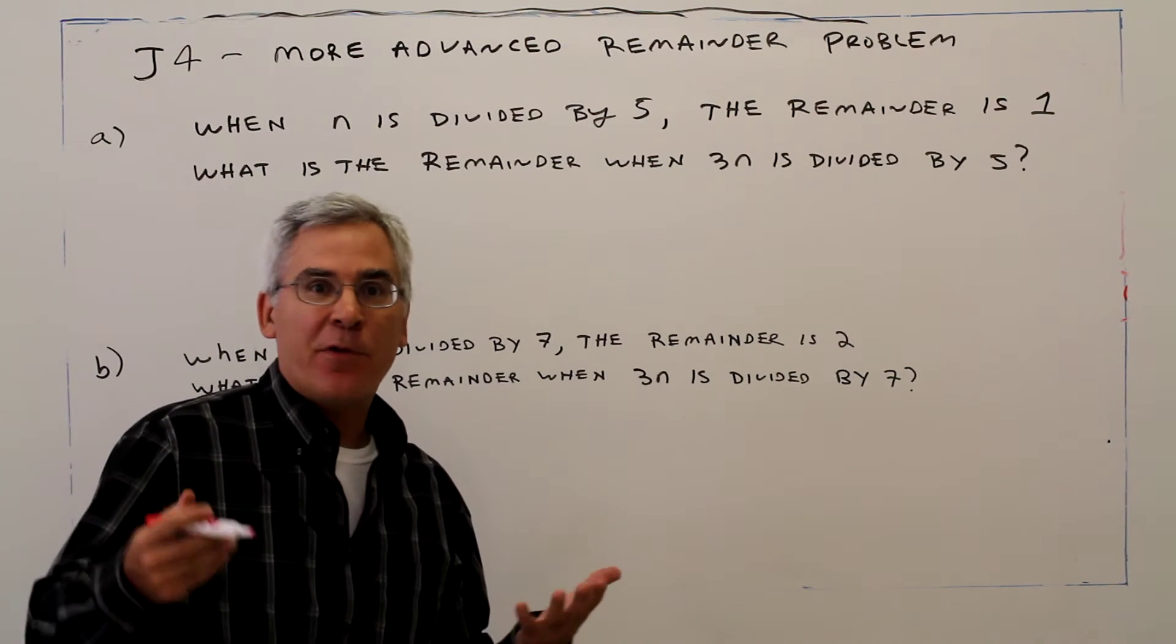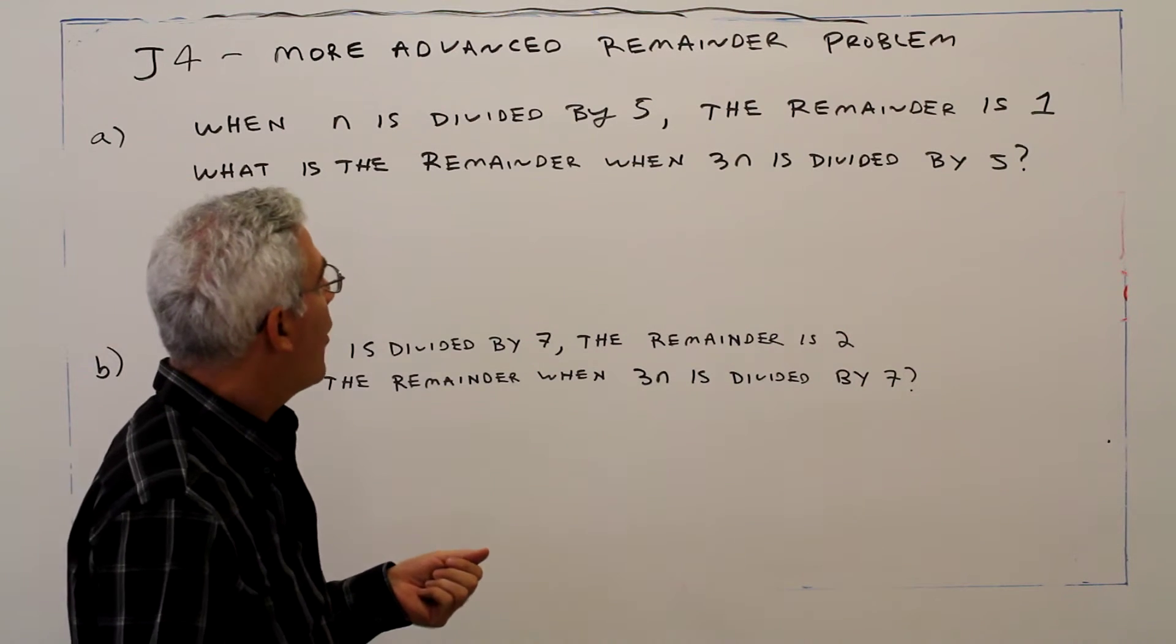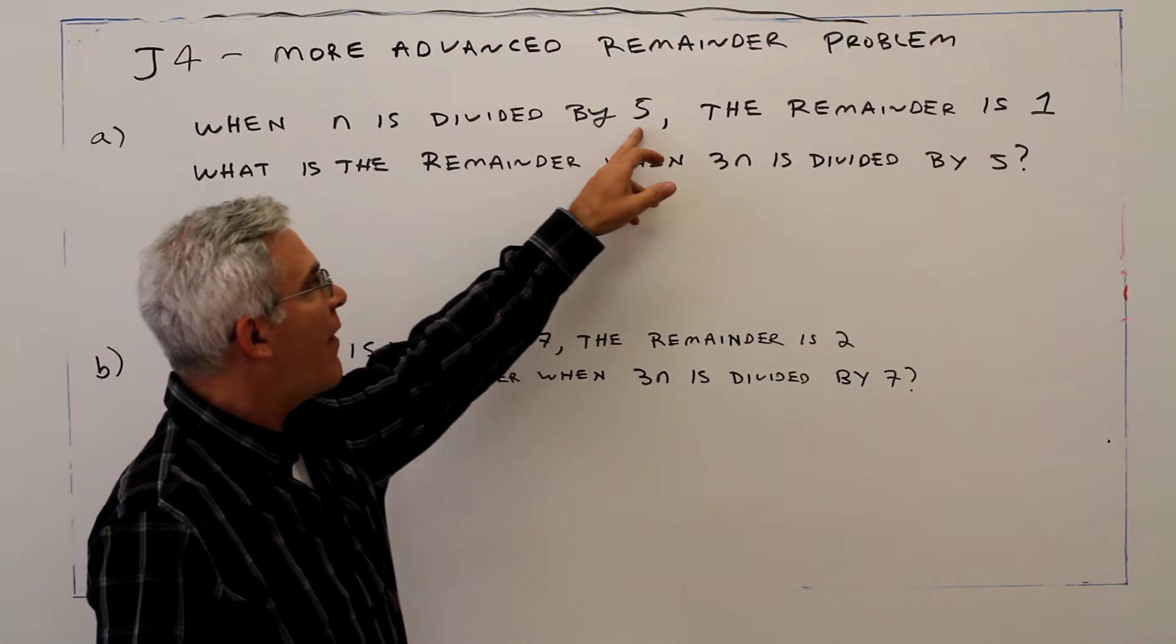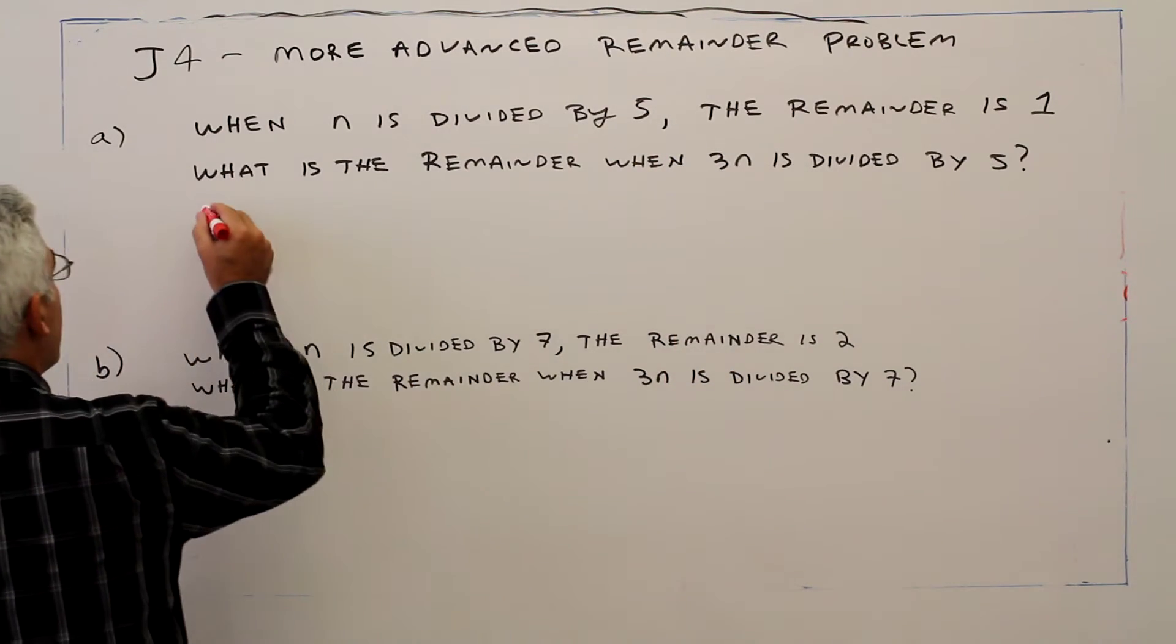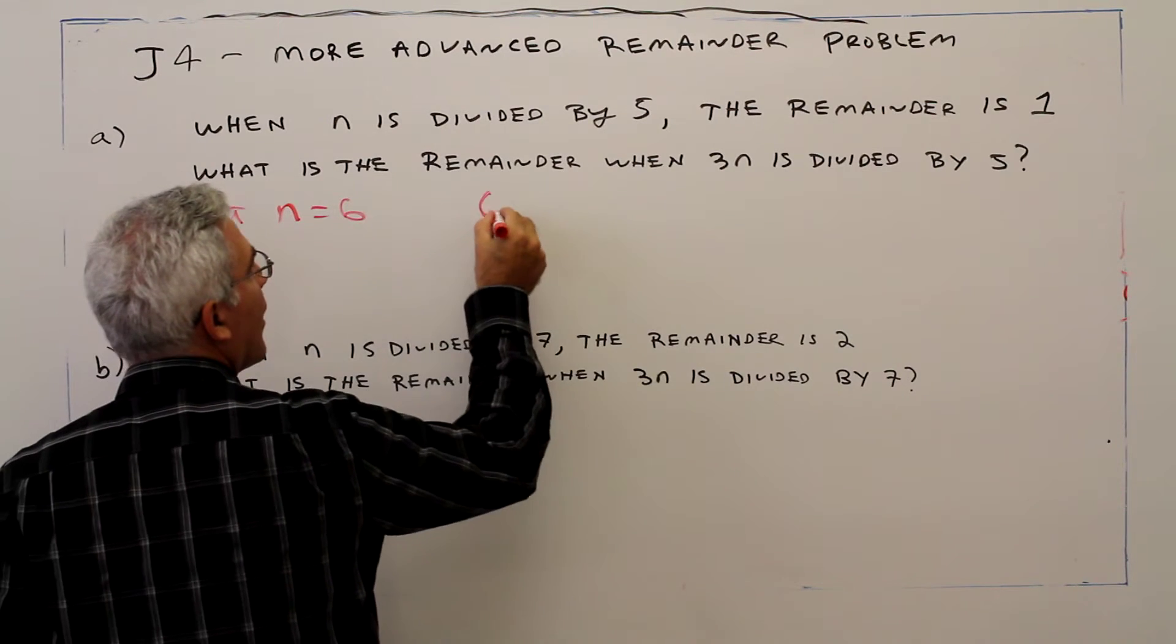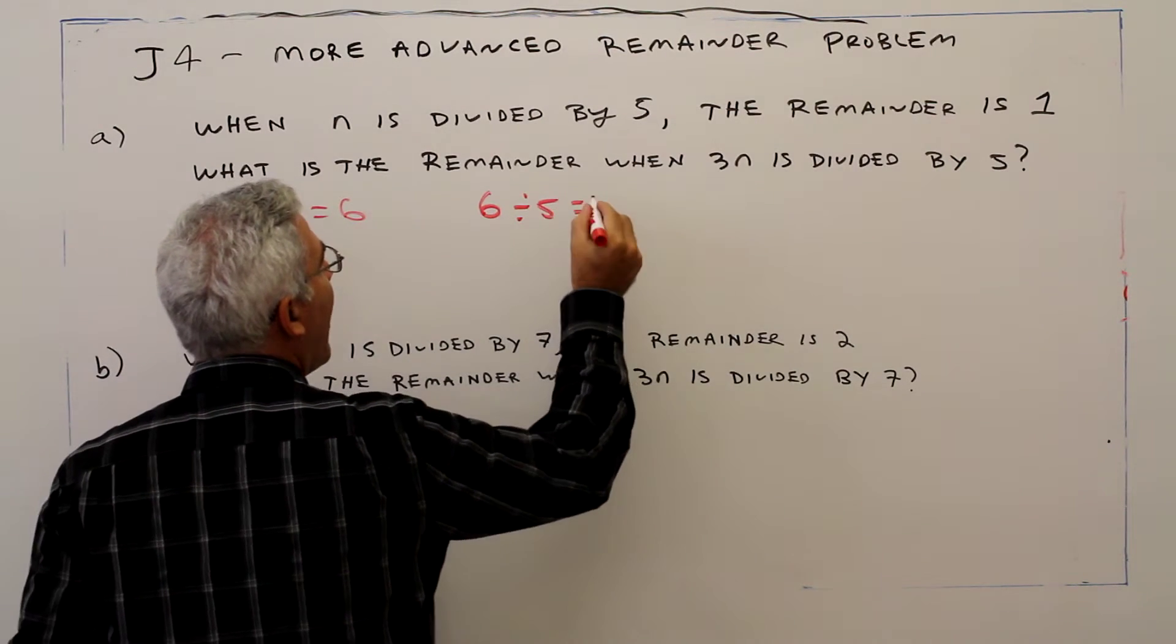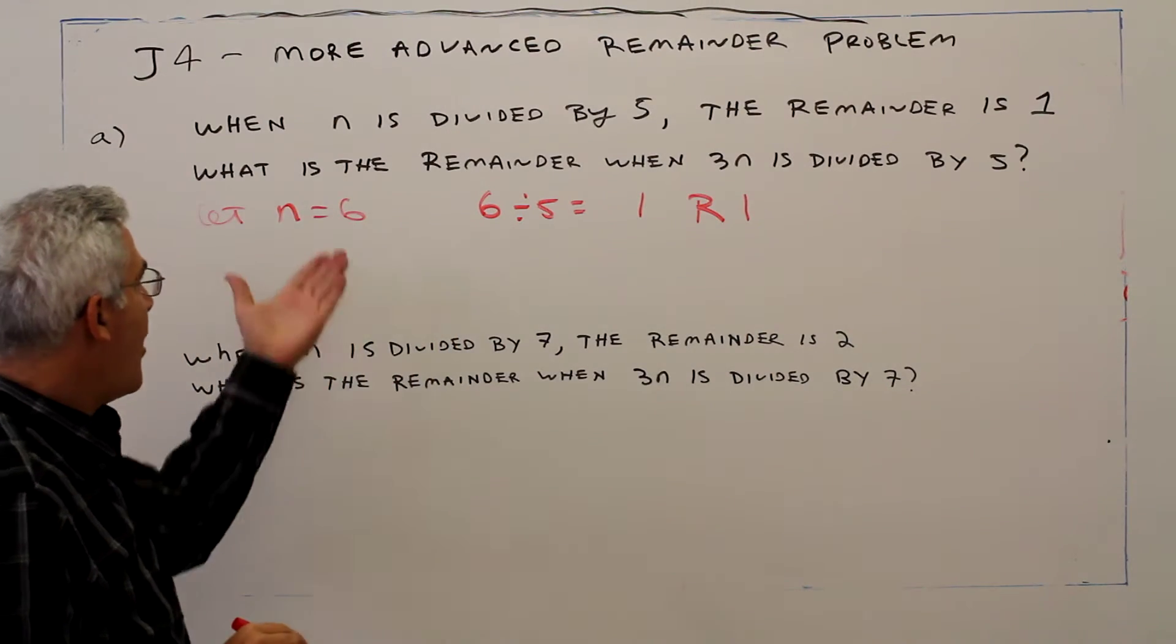What I usually do for this is look for some concrete numbers and see what's going on. I know that 6 divided by 5 has a remainder of 1, so I'll choose to let n equal 6. And 6 divided by 5 equals 1, remainder 1.